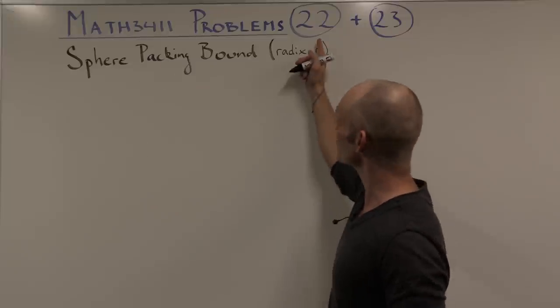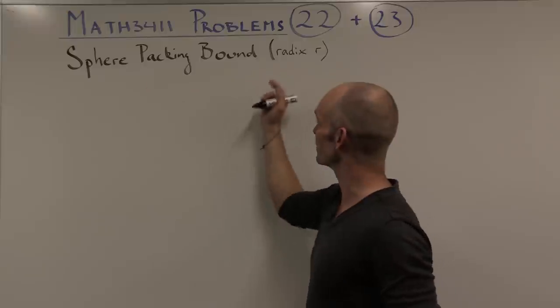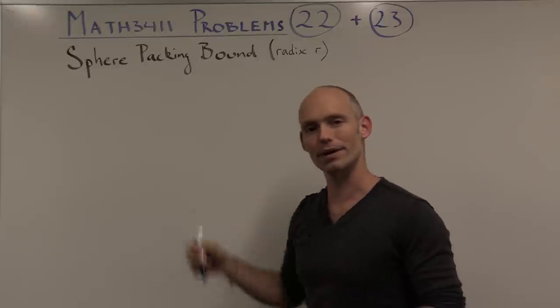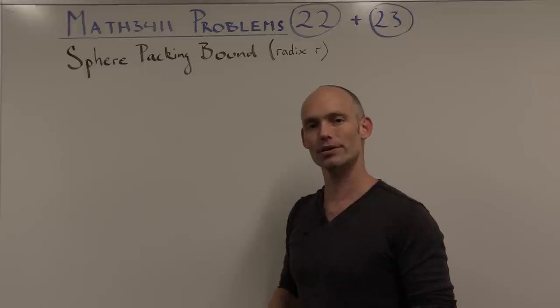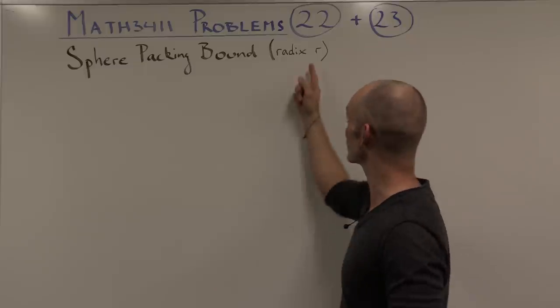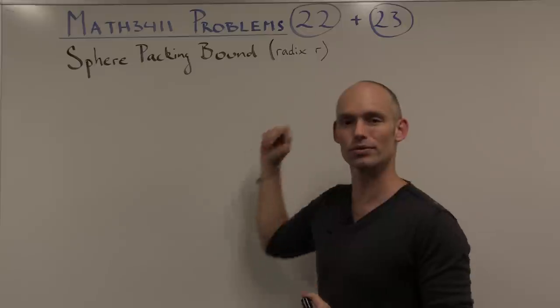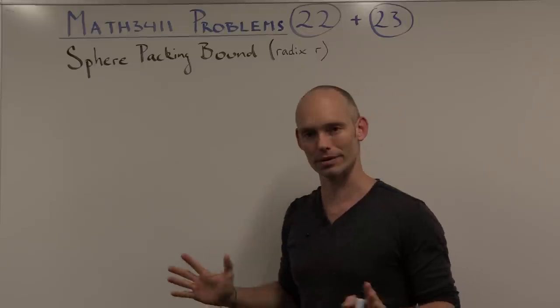Problem 22 is all about the sphere-packing bound, and we've seen this bound explained as a theorem in the lectures and course notes, but that was only for the binary case, the case in which the radix r was equal to 2. Now we're going to look at the general case.